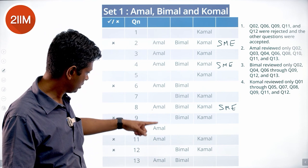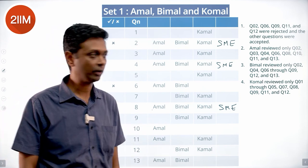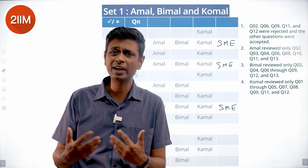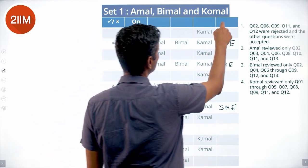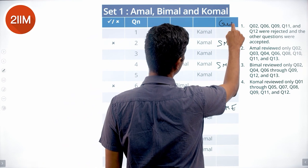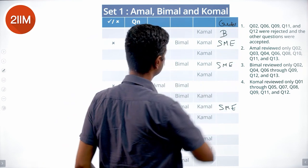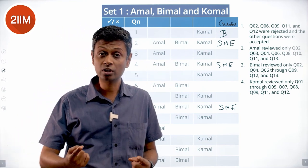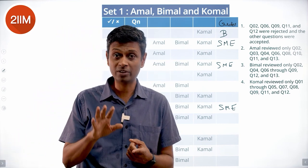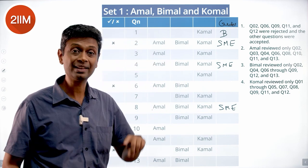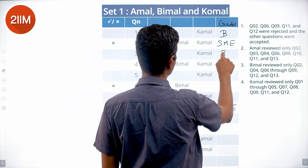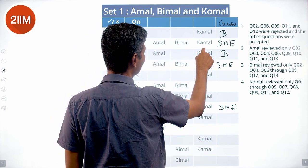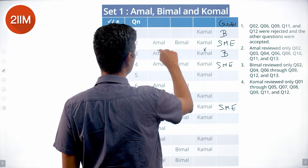We can fill in who created each question. Q1 was created by Bimal. For Q2 — reviewed by Amal and Komal — it could not be SME (SME requires Amal then Bimal). So this was created by Bimal; Komal rejected it and then Amal accepted it.